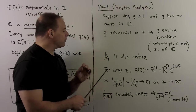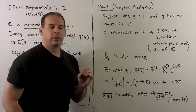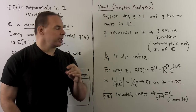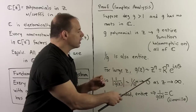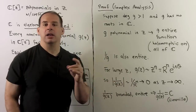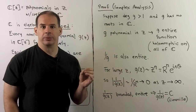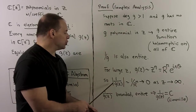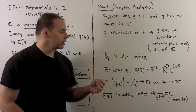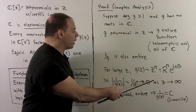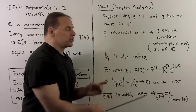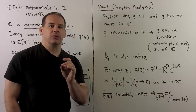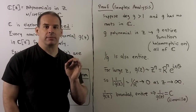If we consider the behavior as z gets large, g(z) is a polynomial, so it behaves like z^n with n a positive integer. That means if we take the modulus of 1/g and let z get large, this goes down to zero. So 1/g is a bounded entire function, and by Liouville's theorem, it must be a constant.